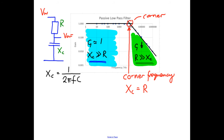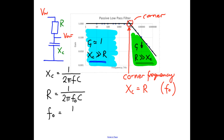Let's see what that means in terms of the maths. We already have our reactance equation, so we write R equals 1 over 2πf₀C, making the resistance equal to the reactance. Because it only occurs at one very special frequency, we call that frequency f₀, the corner frequency. If we rearrange this equation, we get the corner frequency f₀ equals 1 over 2πRC. And that's a lovely way of being able to work out the performance of our filter.